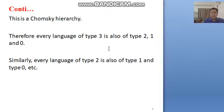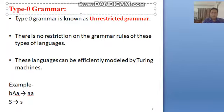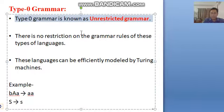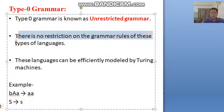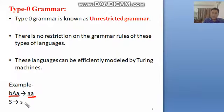Type 0 grammar is also known as unrestricted grammar. There is no restriction on the grammar rules of these types of languages. On the left hand side and right hand side of a production, you can have any number of symbols — more than one, or fewer — there is no restriction, which is why it is called unrestricted grammar.